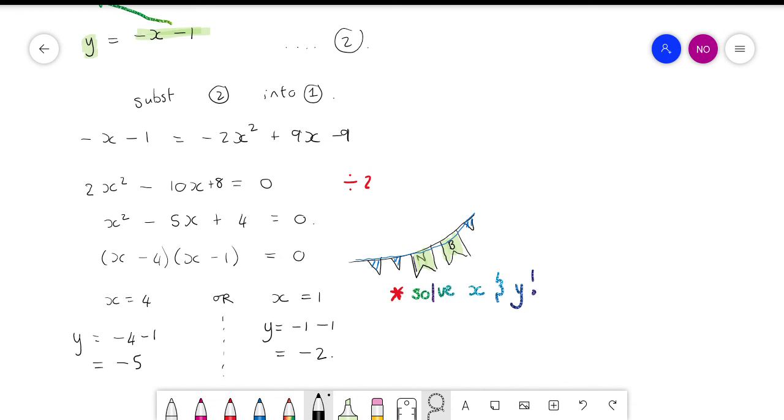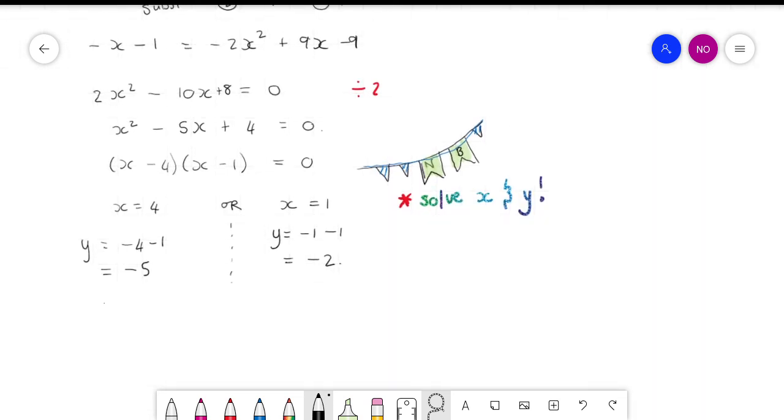Now you guys can leave it as that. But graphically, what we did is we found the coordinate for the two intercepts. You see, x value 4, y value negative 5, x value 1, y value negative 2. So you found the two coordinates for the intercepts. But when we get to graphs again, I think it's in unit 5, whatever, then we'll get back to this. So you don't have to write this part. You can just stop there.